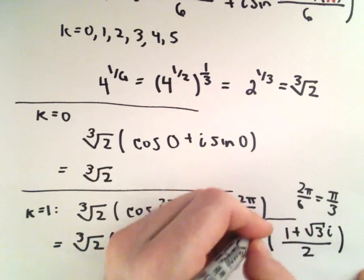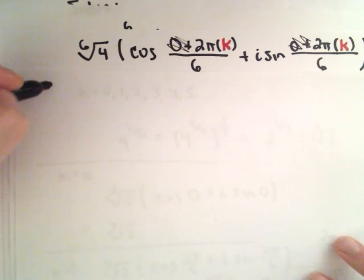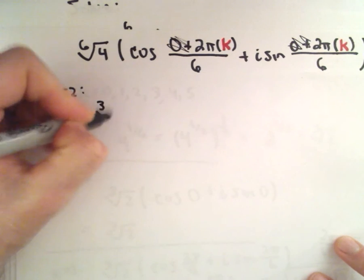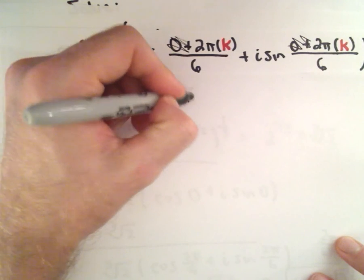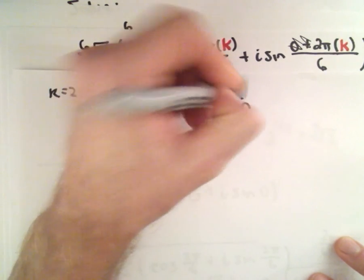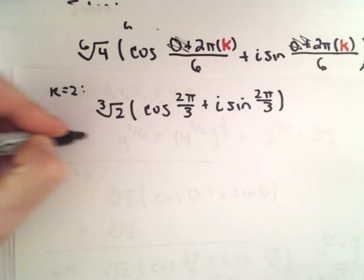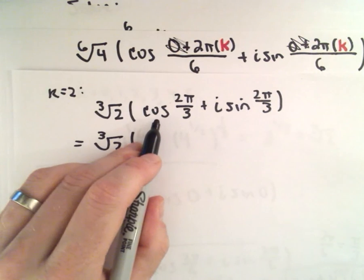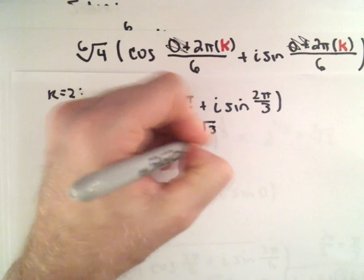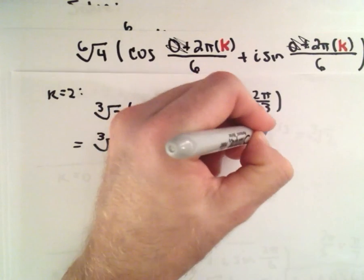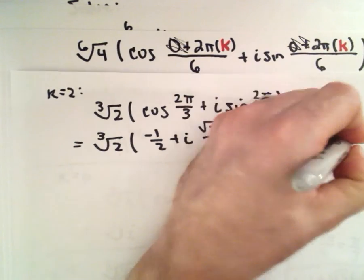For k equals 2, we have the cube root of 2 times cosine of 4 pi over 6, which reduces to 2 pi over 3, plus i times sine of 2 pi over 3. Cosine of 2 pi over 3 is negative 1/2 and sine of 2 pi over 3 is root 3 over 2. So we can write this as the cube root of 2 times the quantity negative 1 plus the square root of 3 times i, all over 2.